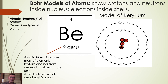Next we look at the atomic mass. Because beryllium has a mass of nine atomic mass units, and we know that four of those atomic mass units are protons, the remaining five atomic mass units must be neutrons.